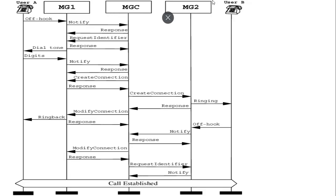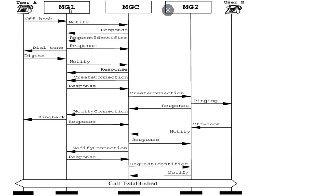Here is an architectural diagram where two endpoints are connected to two different media gateways, with the media gateway controller in between. Whenever a call establishes from the signaling gateway, the media gateway sends a request and the controller creates a connection with the second media gateway. The modify connection process happens and then voice is established between the two endpoints.